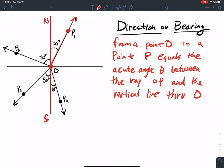So the illustration here shows some bearings. Notice that the bearing from O to P1 is denoted by north 30 degrees east, to the east.